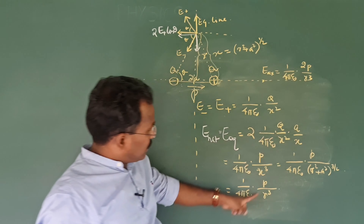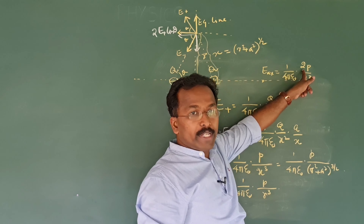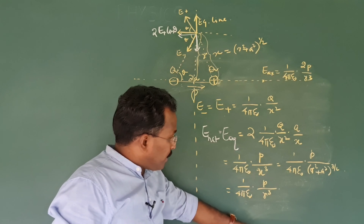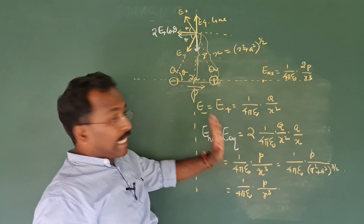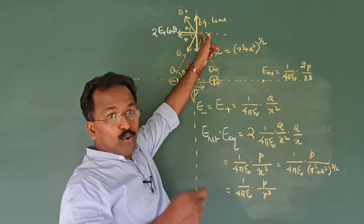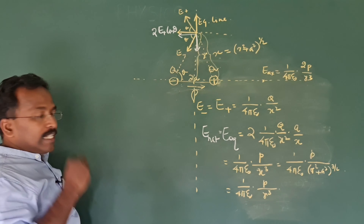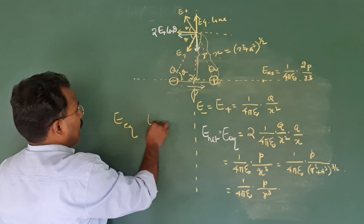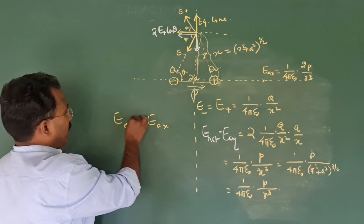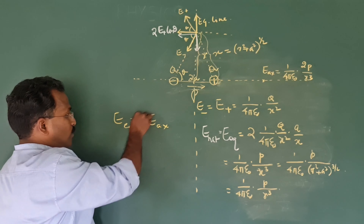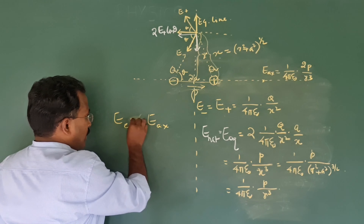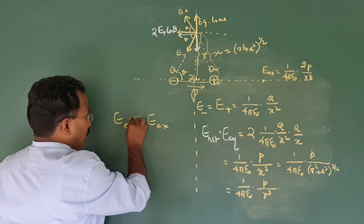It is almost the same only, because you have a factor of 2 appearing in the axial case. That means it is P by R cube for equatorial and 2P by R cube for axial. That means the equatorial intensity is only half of the axial intensity. E equatorial and E axial — they are not equal. Axial intensity is 2 times the equatorial intensity.